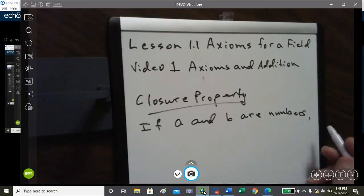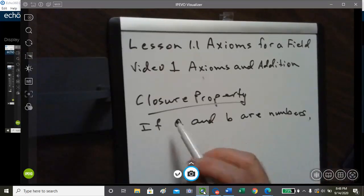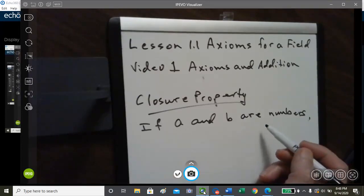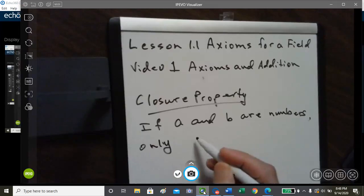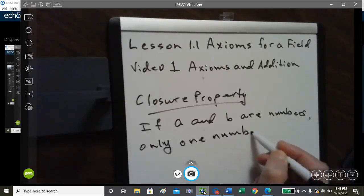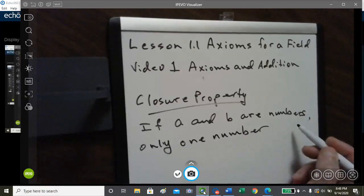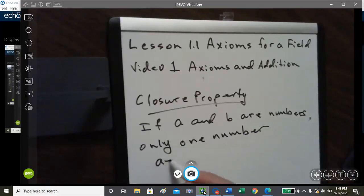Axioms in Addition. I'm going to start with the closure property. If we have two numbers, A and B, and we're calling them numbers, then there is only one number where if we add the two, A plus B, then this is called their sum.